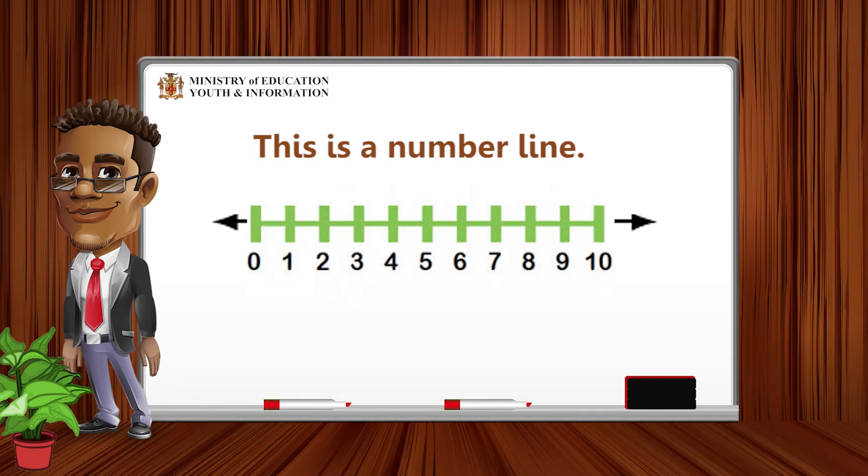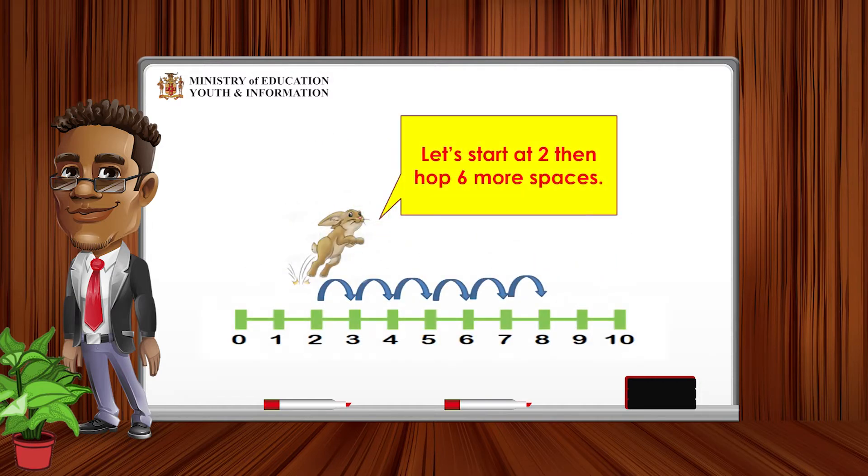Now that you know what a number line looks like, let's hop along the number line with the bunny. I need you to pay attention to the direction of the hops the bunny makes and the number the bunny lands on. Here, the bunny starts at 2, then hops 6 more times while counting on by 1. What do you notice about the number the bunny lands on? If you said the numbers get larger and larger when he hops to the right, you are correct.